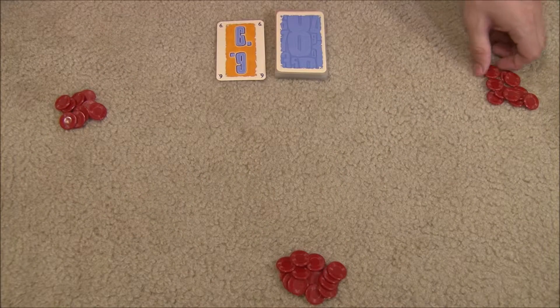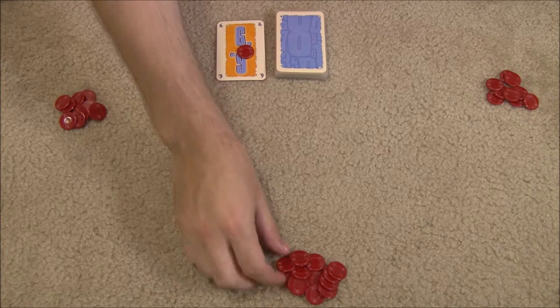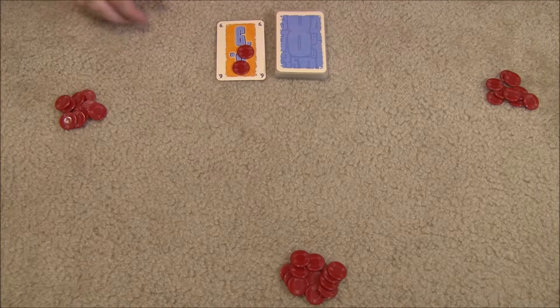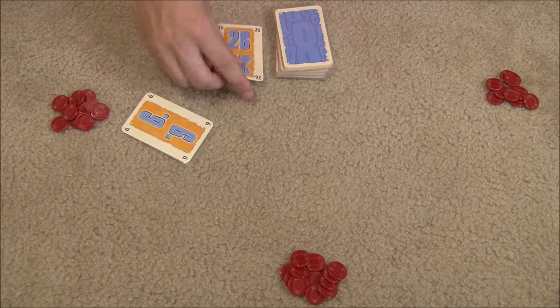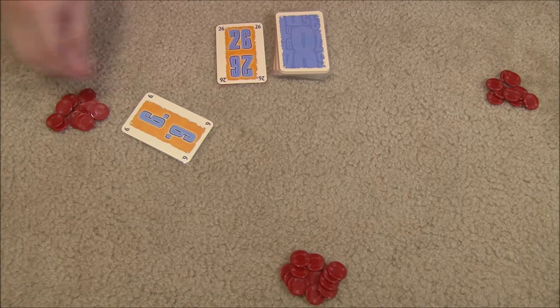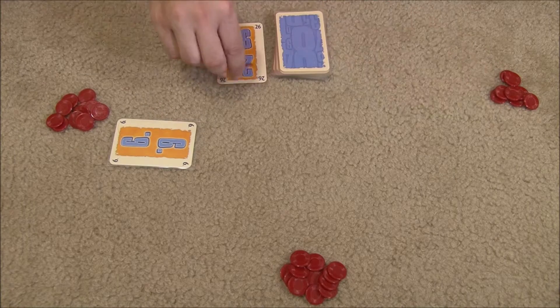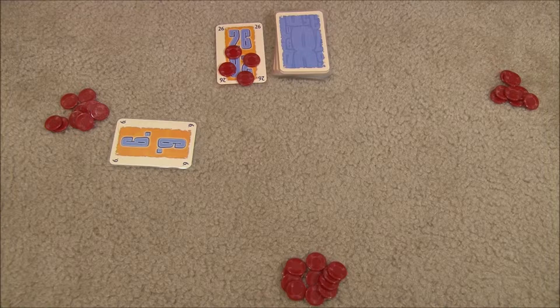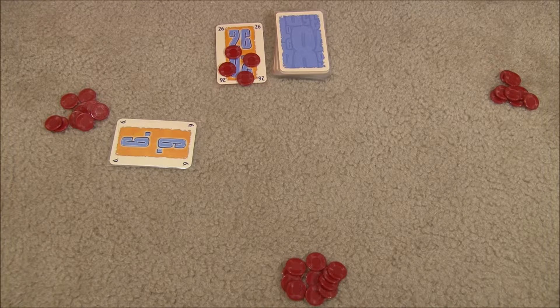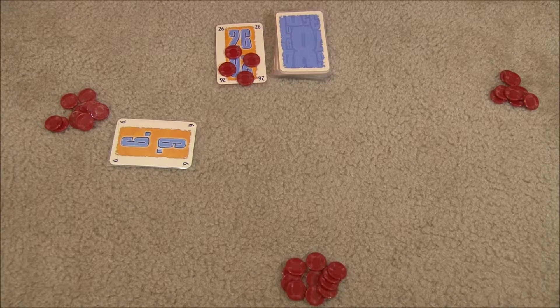So this guy over here is going to go first, and he decides he's going to put a chip on that. This guy's going to put a chip as well. This guy says, you know what, I'm just going to take the six. So he takes the two chips, and the six card is now in front of him. He flips a new card and has the same decision to make. He decides to put a chip on this card, as does this guy, as does this guy. And he decides he's going to put another chip. It goes around until somebody takes this card. We'll jump back a little bit later in the game so you can see some more interesting situations.